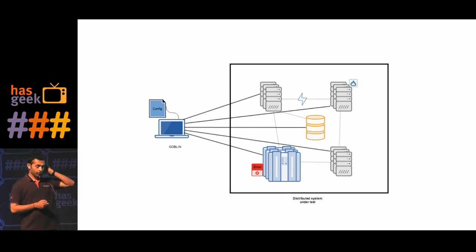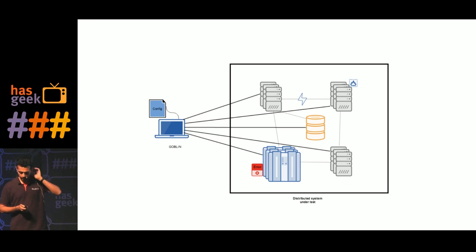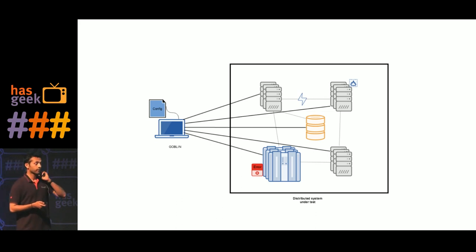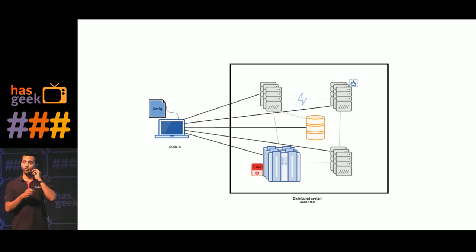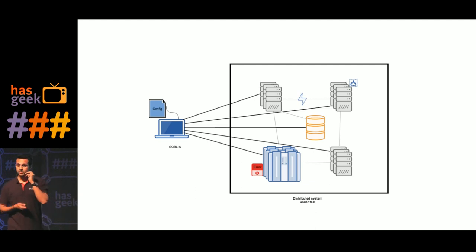This is how Goblin looks in action. You have Goblin on your local machine, and it has a configuration file that describes the system you have. Assuming you've got tests written, it goes and kills stuff in the network lab, then records your results and publishes them.